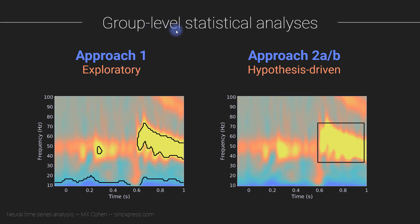Approach 1 for group-level or level 2 statistical analyses is oriented towards exploratory analyses. This would be the kind of situation where maybe you don't have a real hypothesis, or maybe you have a bit of an expectation — you know which conditions you should be comparing or which electrodes or brain regions — but you're not really sure which frequencies or which time points you want to constrain yourself to. So that's Approach 1.